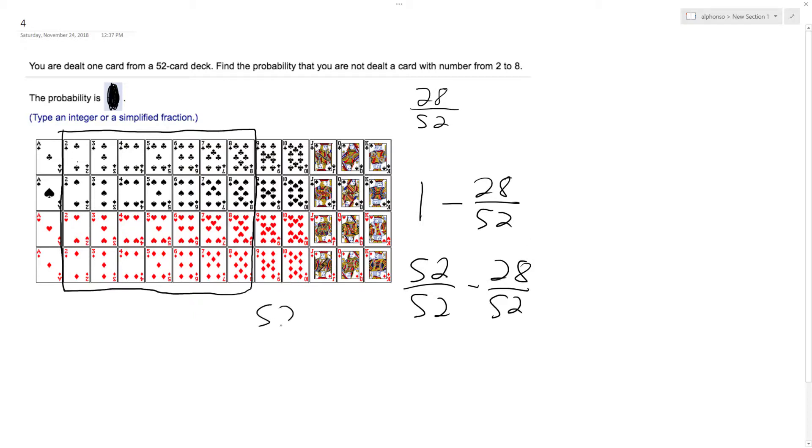So 52 minus 28... this ends up being 24. So 24, that's the remainder when you subtract that. So 24 out of 52.